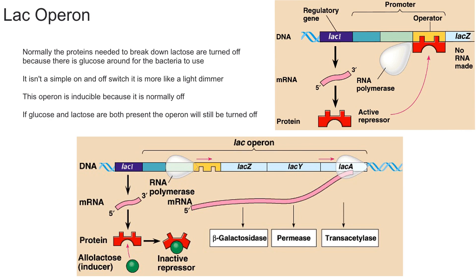Normally, if you look over here, the lac operon is off because you have a lot of glucose around. The repressor — which is more of a blob shape than a block — is going to bind to this part of the DNA sequence to prevent the transcription of the lac operon and the genes needed to break down lactose.